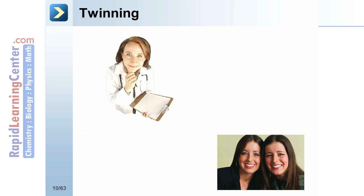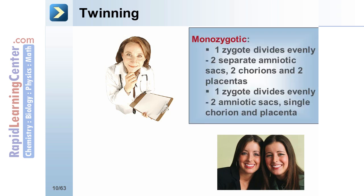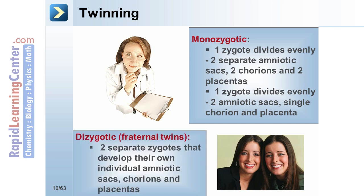While on the topic of embryos, we must mention the phenomenon of twinning. There are two types: monozygotic and dizygotic. Monozygotic twins can develop in two ways: first, one zygote divides evenly forming two separate amniotic sacs, two chorions, and two placentas; and second, one zygote divides evenly to form two separate amniotic sacs with a single chorion and placenta. Dizygotic or fraternal twins result from two separate zygotes that develop their own individual amniotic sacs, chorions, and placentas.